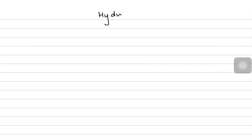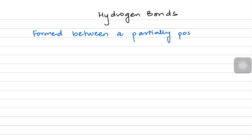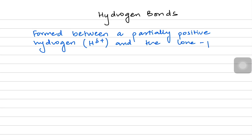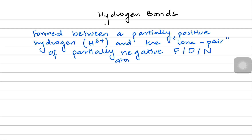From the idea of dipoles, let's jump to the similar concept of hydrogen bonds. Hydrogen bonds are very similar to the permanent dipole interactions — indeed, they are a kind of permanent dipole interaction. Hydrogen bonds are formed when there is a partially positive hydrogen atom. Its electrons are drawn towards the other partially negative atom. These are bonds formed between the partially positive hydrogen atom and the lone pair of a partially negative atom. The highly electronegative atoms — fluorine, oxygen, and nitrogen — are the only three that can form hydrogen bonds because of their partial negative charges.